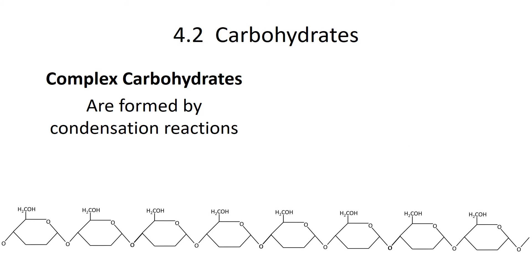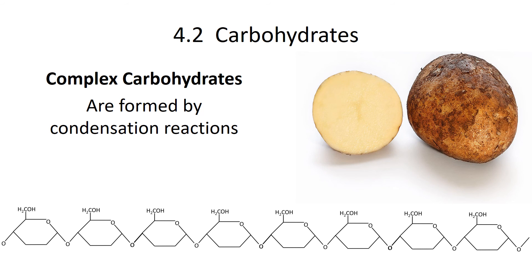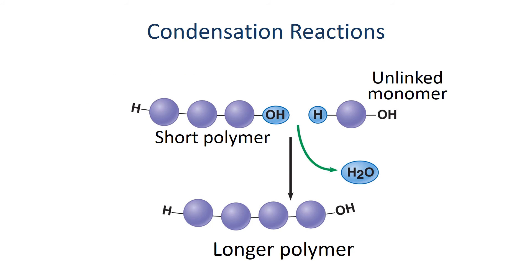Complex carbohydrates are large polymers made up of mostly glucose. That molecule on the bottom shows glucose molecules linked together — they're formed by condensation reactions. A complex carbohydrate — you're actually really familiar with this. Imagine a potato or rice; that's mostly starch, which is a type of complex carbohydrate. They are made by condensation reactions, which is an anabolic reaction and requires energy to make it. It's also called a dehydration reaction because the overall longer polymer — our complex carbohydrate — is losing water.